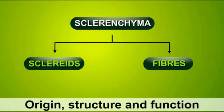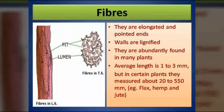Sclerenchyma tissues are classified into two types: fibers and sclereids. Fibers are elongated tissues with pointed ends — they are lengthier with both sides pointed. The walls of these fibers are made up of lignin, so they have lignified walls. These fibers are evidently found in most plants, where they add strength to the plant.